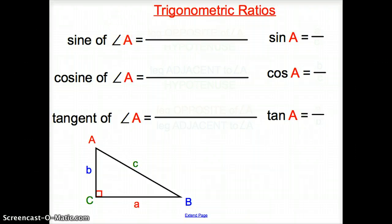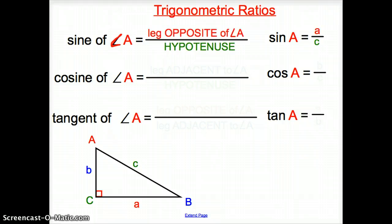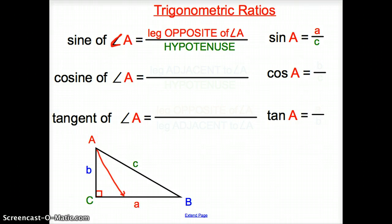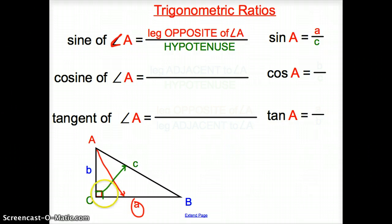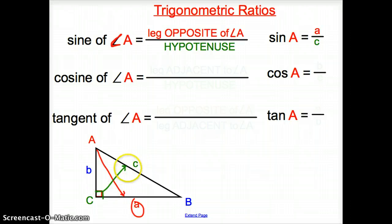The first one we have is sine of angle A — this symbol means angle. Sine of angle A equals the leg opposite of A over the hypotenuse. The hypotenuse is always across from the 90-degree angle, so here's our 90-degree angle and the leg opposite to it is the hypotenuse.